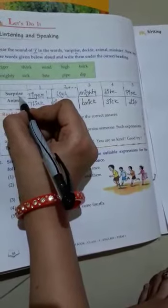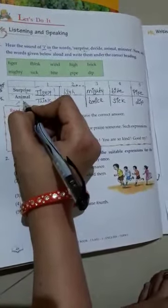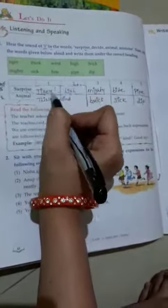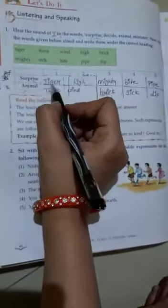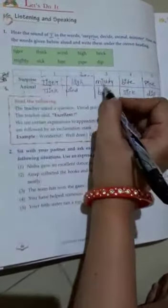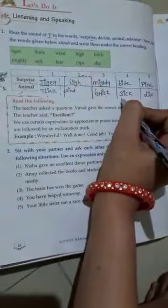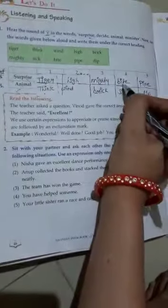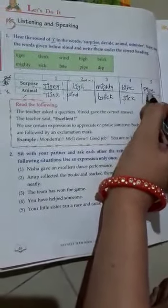Surprise has 'i' sound. Any has 'e' sound. Tiger - 'i'. Think - 'e'. Wind. High - 'i'. Brick - 'e'. Mighty. Sick. Bite - 'i'. Pipe - 'i'. Dip - 'e'.